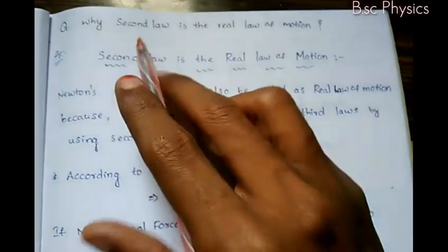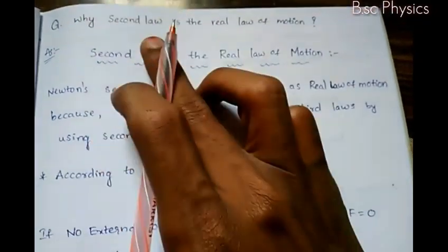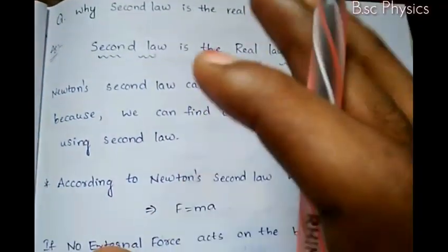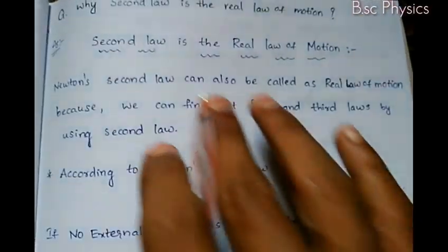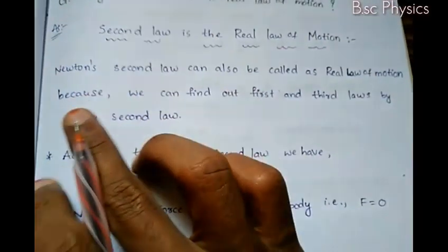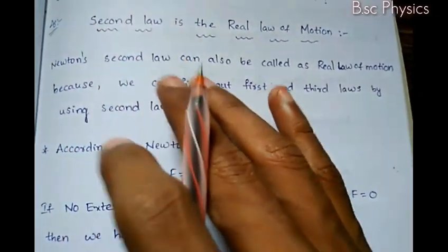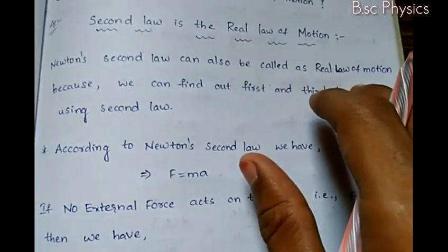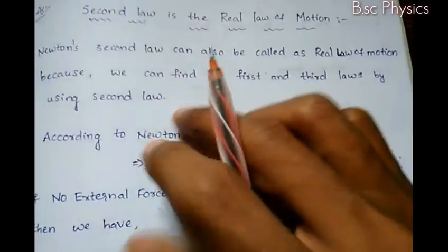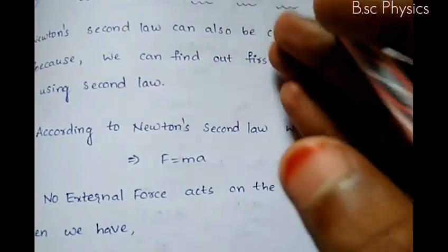So I will show you why the second law is the real law of motion. We have Newton's second law — why is it called the real law of motion? Newton's second law is called the real law of motion because we can find out the first and third law by using the second law. We can use Newton's second law to prove the first law and the third law.